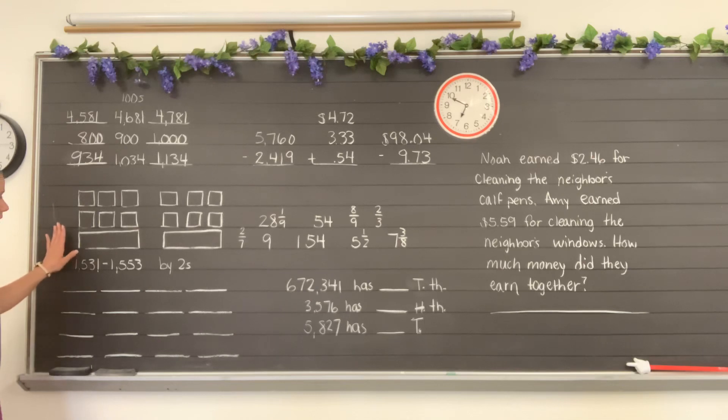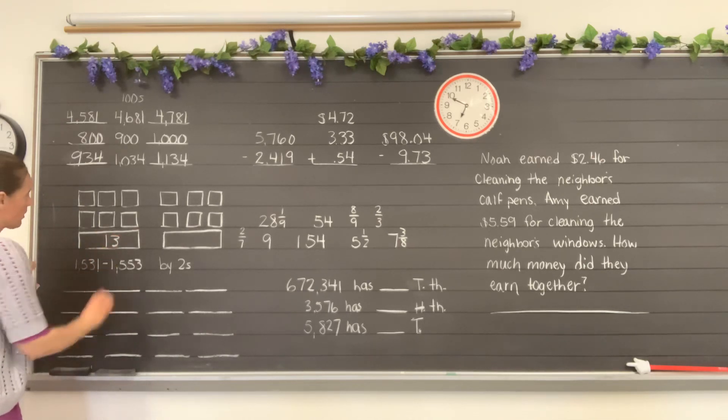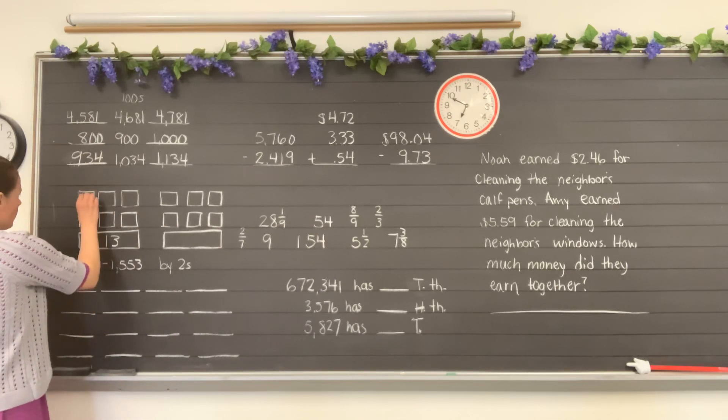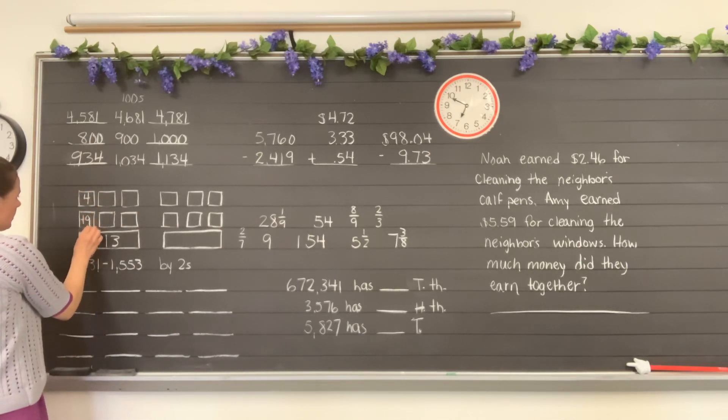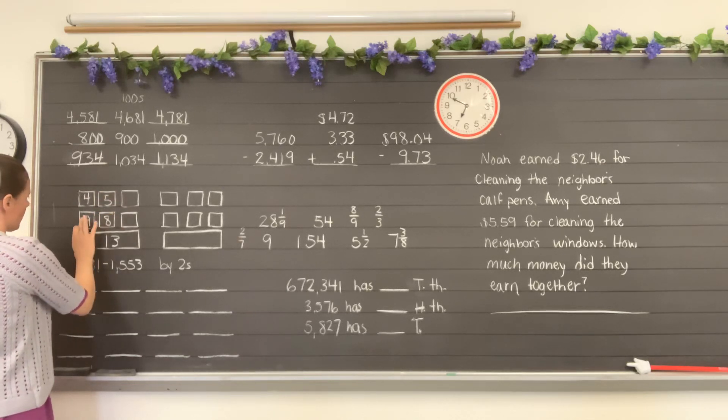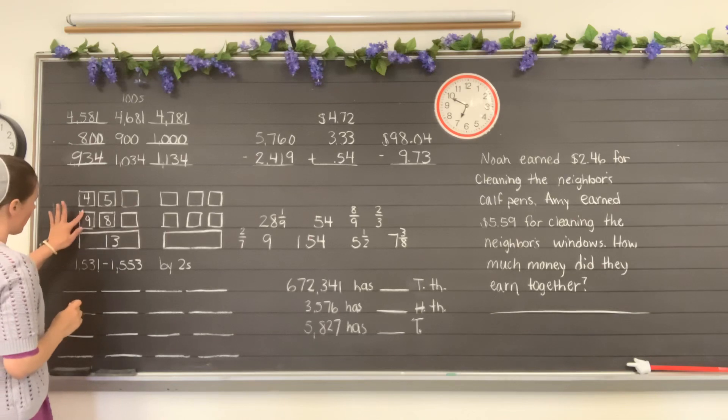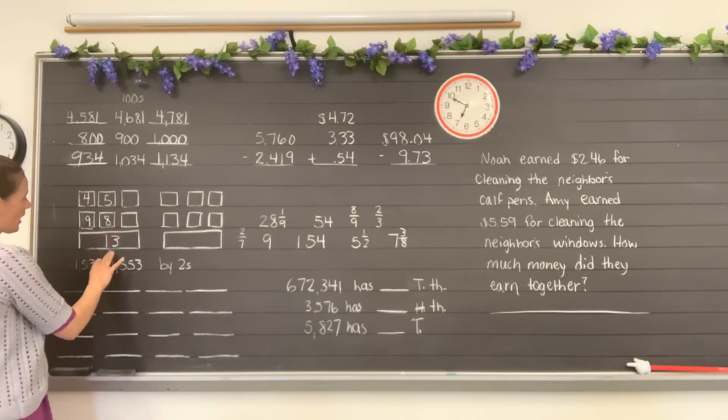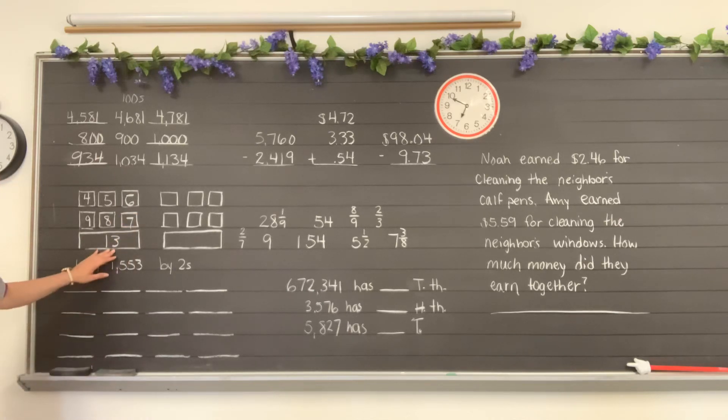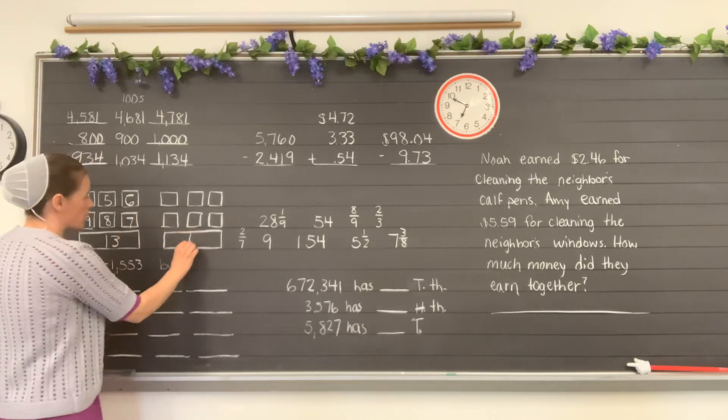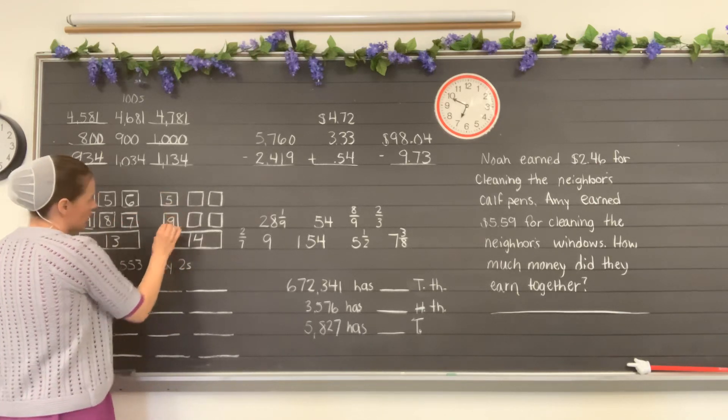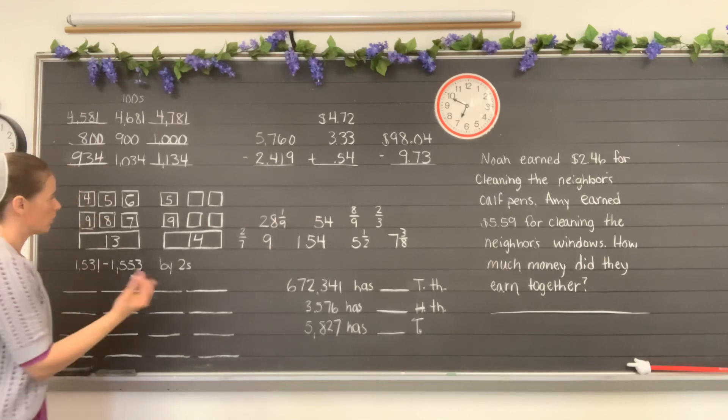Here we have 13 facts, so let's just fill in the 13 facts. The first one would be 4 plus 9 equals 13, 5 plus 8 equals 13, and 6 and 7 is 13. And this is the 14 family, so we have 5 and 9 is 14, 6 and 8 is 14, and 7 and 7 is 14.